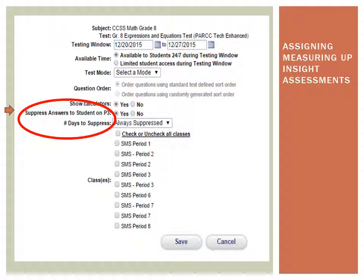The teacher has the option to suppress answers to the student on their personal prescriptive path. By selecting no, the students will see the answers to the assessment upon completion in his or her student P3.